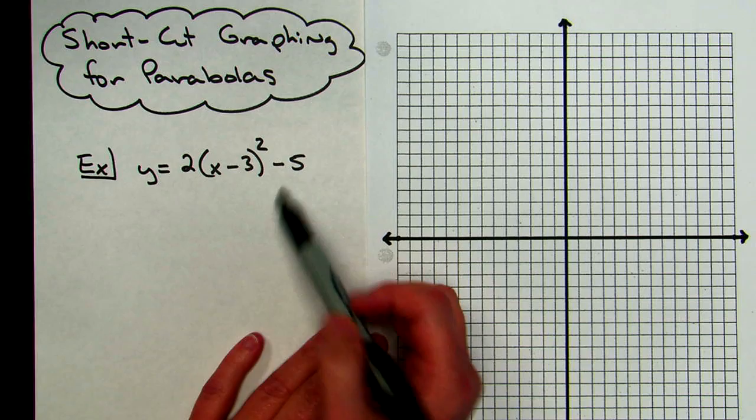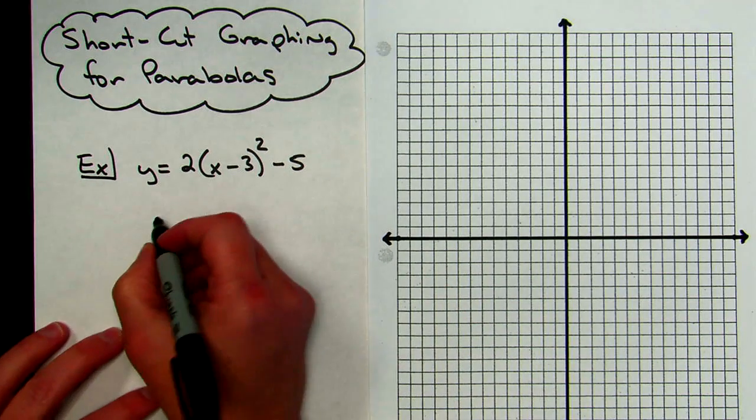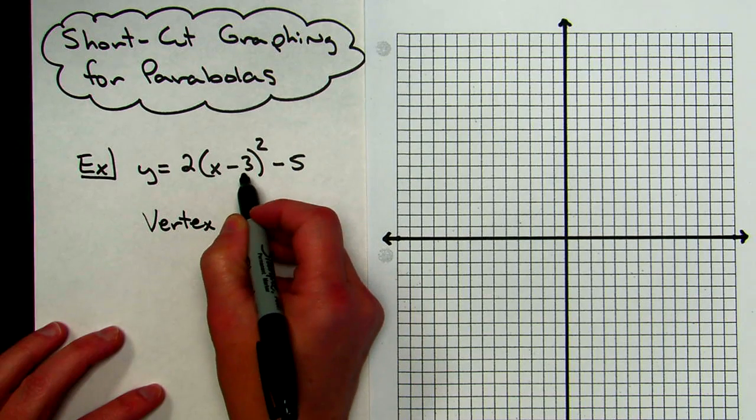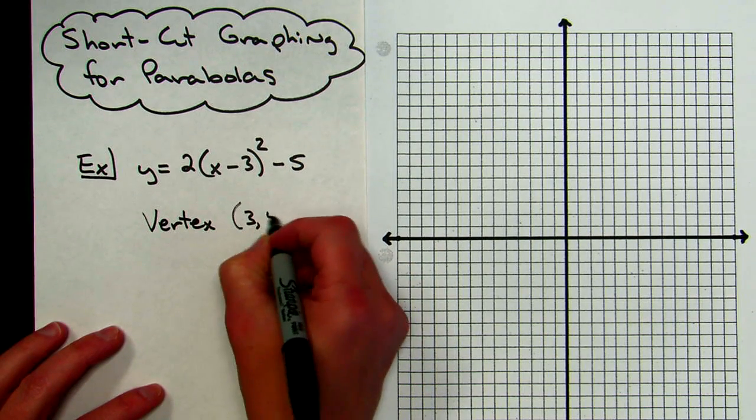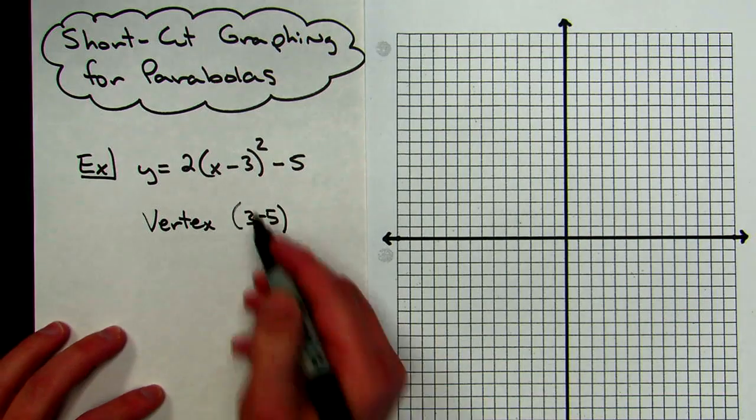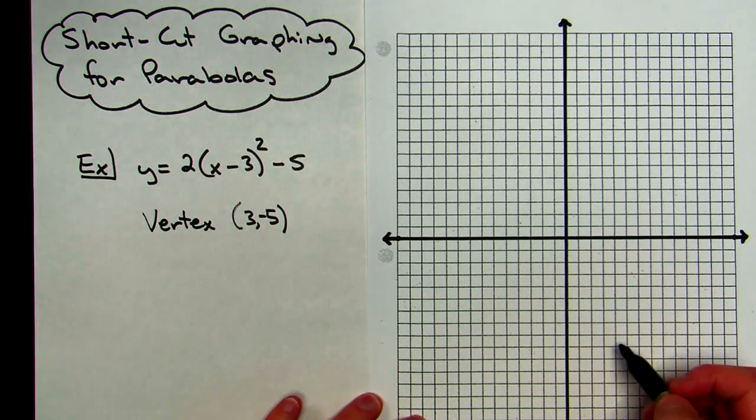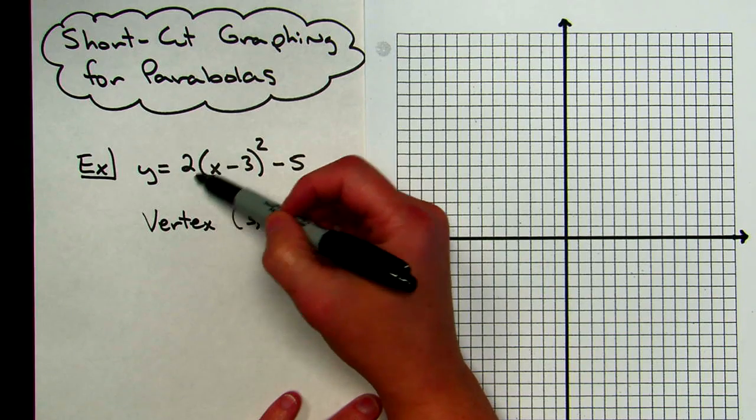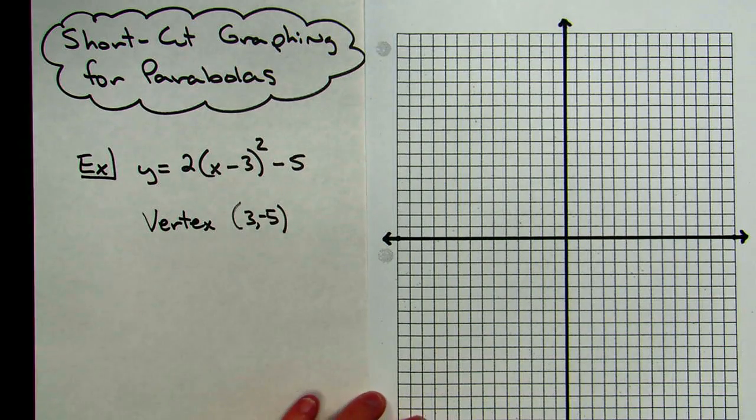With this being in vertex form, real quickly, I can tell that my vertex to this parabola is going to be 3, negative 5. In other words, I shift to the right 3 and then down 5, that's going to be my vertex. The 2 right there tells me that it's going to be an upright parabola.